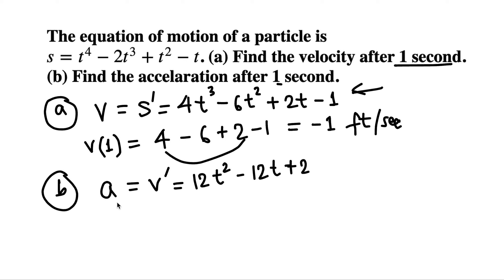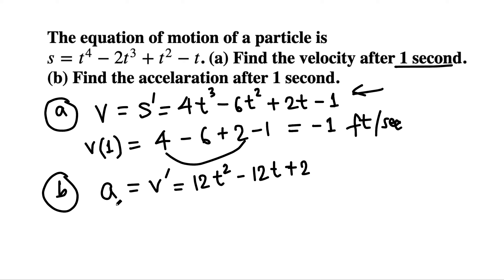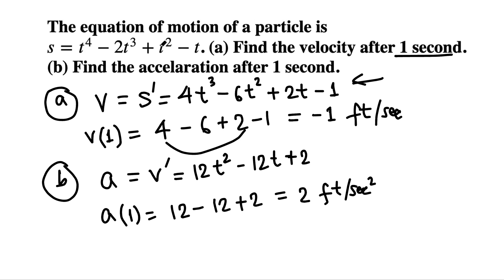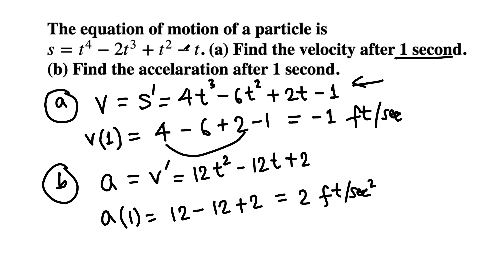That's the acceleration at any time t, but the question wants us to find it after one second. Acceleration after one second means we just plug in 1: 12 times 1 squared is 12, minus 12 times 1 is 12, plus 2. Twelve minus 12 cancel, plus 2 is just 2, and this will be feet per second squared. This is the final answer.